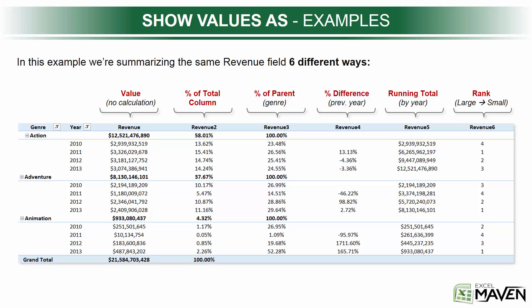The second column is the percent of the total column, and that gives you a really great sense of composition and relative share by year and by genre. At a glance I can tell that action movies as a whole drove 58% of the total revenue over this four-year period. I can also tell that action movies in 2012 specifically drove 14.74% of the revenue in the sample.